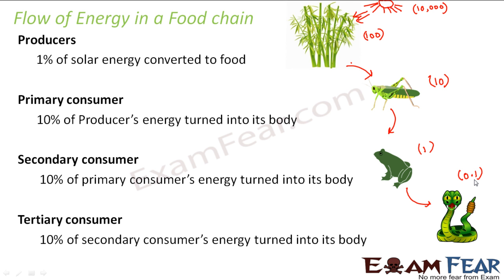Now are you able to understand that if the number of levels in a food chain is too many, the highest level will hardly get any energy? As the level keeps increasing, the amount of energy that comes to that organism keeps on decreasing. Therefore, most food chains which actually exist inside an ecosystem generally consist of 3 to 4 levels. They do not have more than that, because then you will have hardly any energy left to transfer to the higher level organisms. This is how the energy flow actually takes place in a food chain.